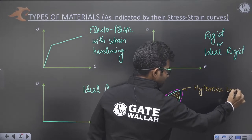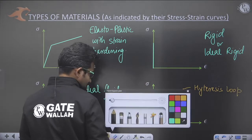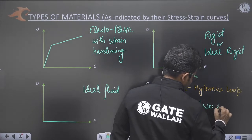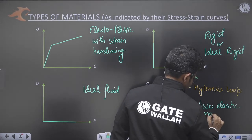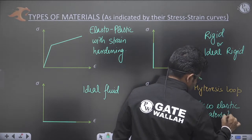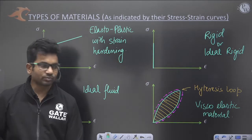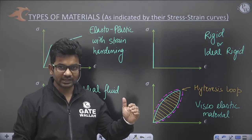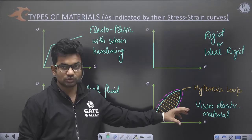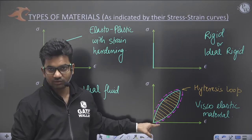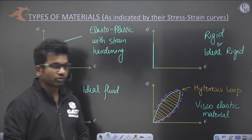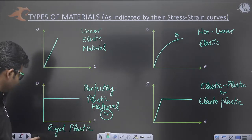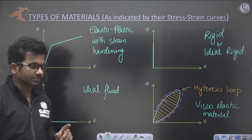This material, which shows a hysteresis loop, is called a viscoelastic material. It possesses both viscous and elastic properties. In its viscous nature, energy is lost, but it is also elastic, so it partially recovers. So these are the eight types of stress-strain curve behavior, which may be asked in objective examinations.